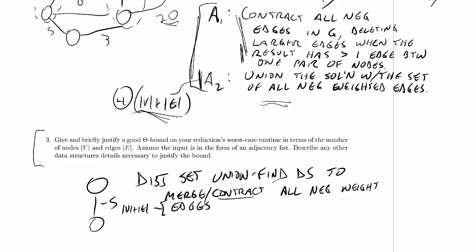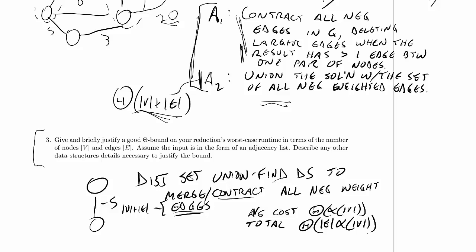Doing the contraction, we do it once per edge. Each time we contract a particular edge, we do two find operations to see which group the vertices on that edge are in. If they're in different groups, we do a merge operation. The number of operations overall is upper bounded by the number of negative edges. Looking up this implementation in section 4.6 of the textbook, the average cost of each operation is theta of the inverse Ackermann function of V. We do that E times, so our total is at most E times the inverse Ackermann function of V.